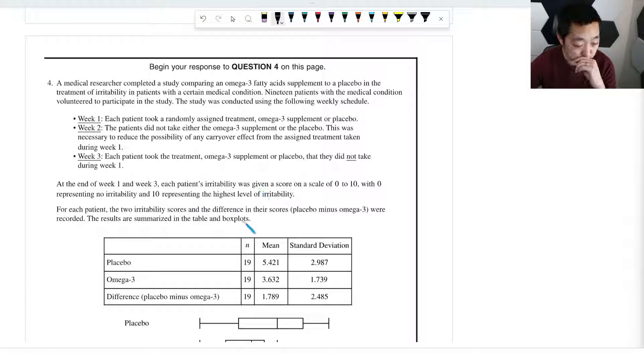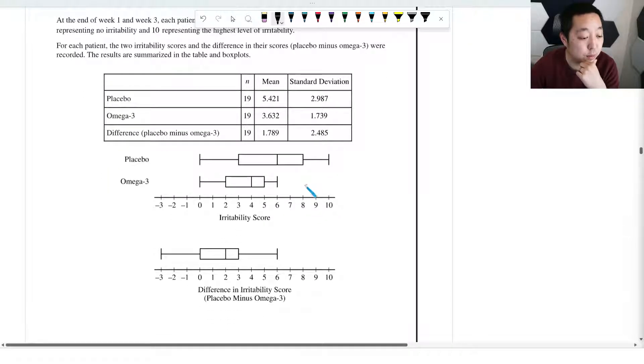Irritability was given by zero to ten. So placebo, omega-3, difference. This is going to be kind of a matched pairs probably because you're doing the same person and comparing their differences here.